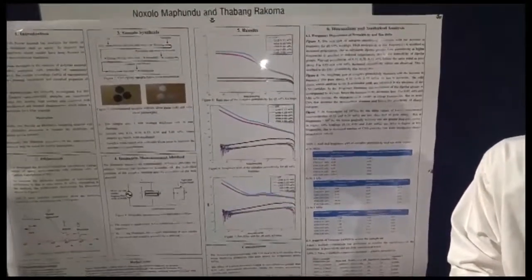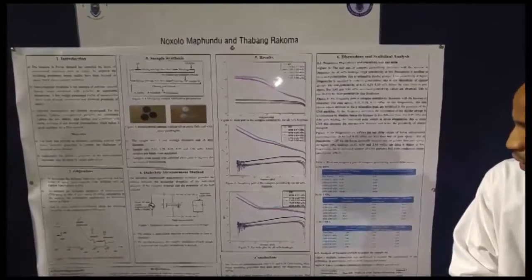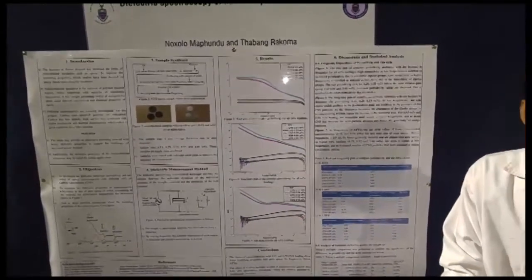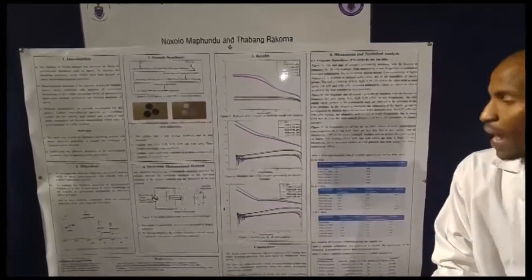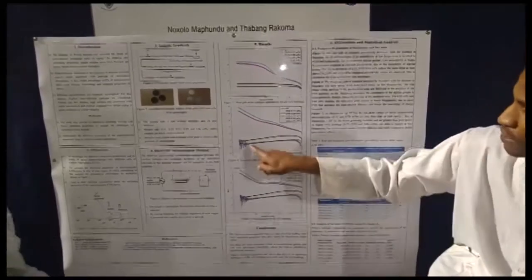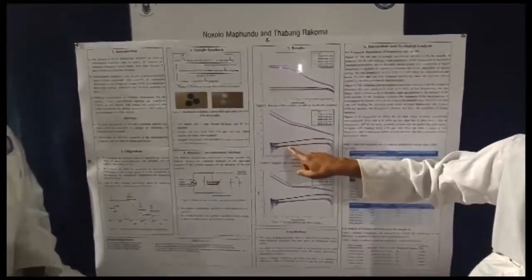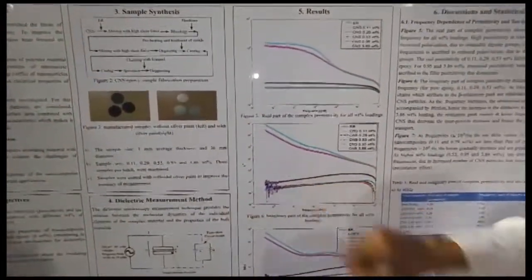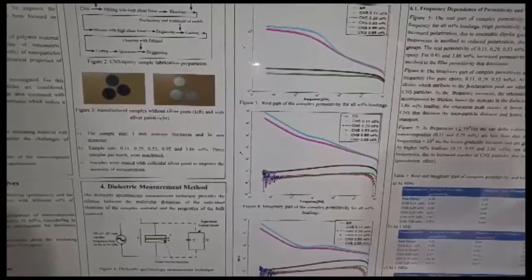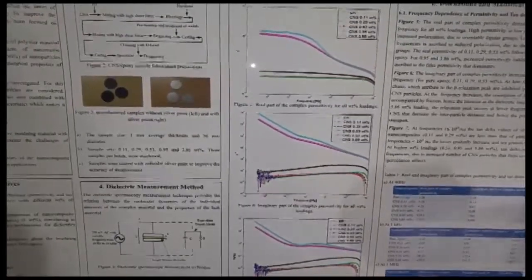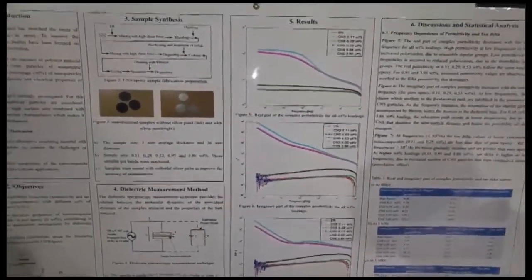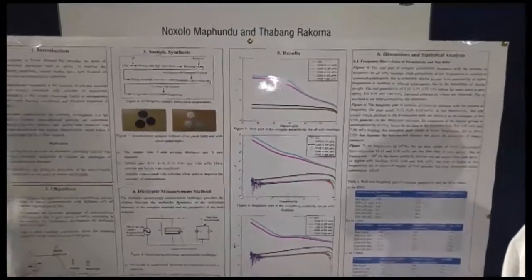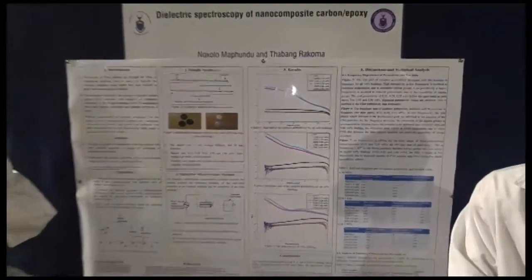there is a significant difference between the sample sets compared to pure epoxy. In conclusion, the losses of the samples below 0.53 weight percentage are lower than that of pure epoxy, which signifies that it is a better insulating material.